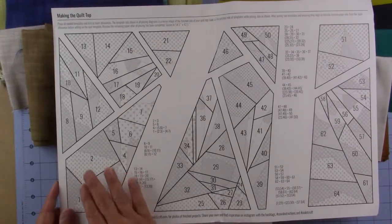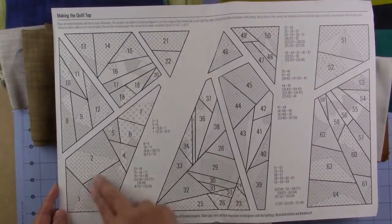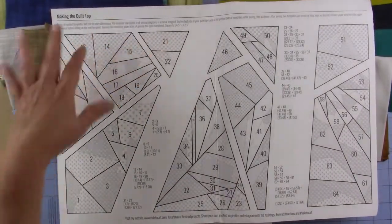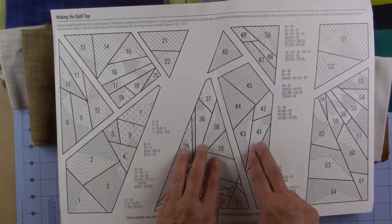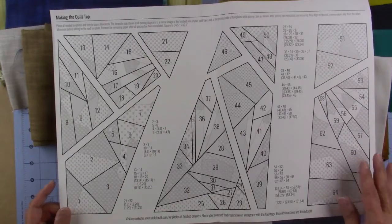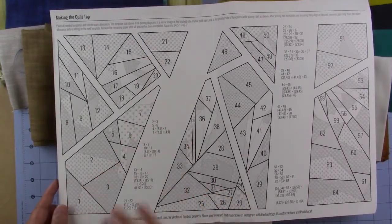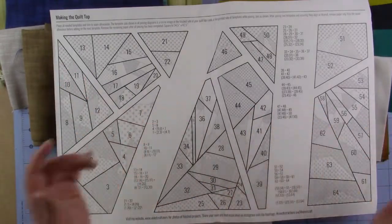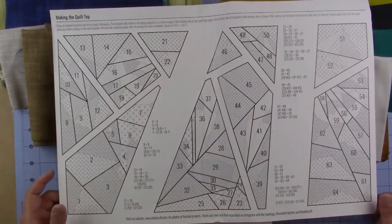It's divided into different sections. Here is one section, and another section, and another. There are four sections over here, four in the middle, and two on this side. You piece each section one at a time, then sew each section together, then sow the three sections together. It's really an easy process.